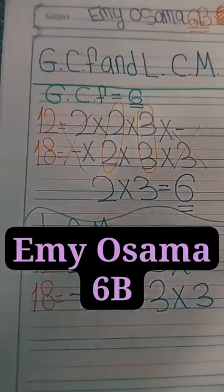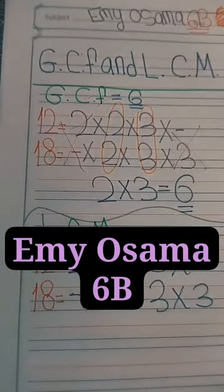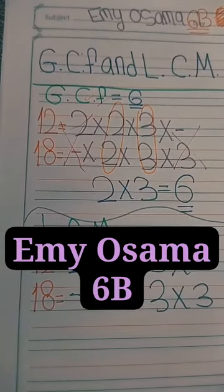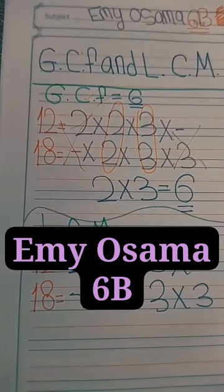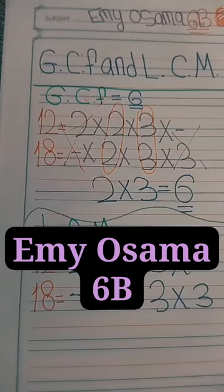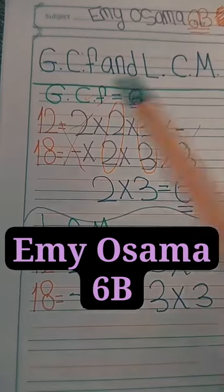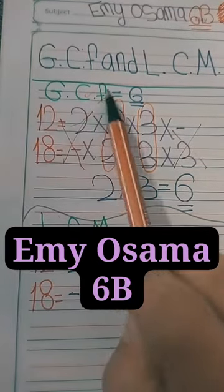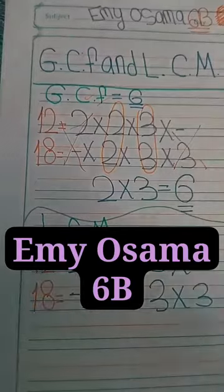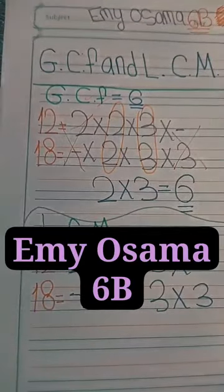So, what shall we do to find the greatest common factor? We are going to multiply: 2 times 3 equals 6. So, the greatest common factor of 12 and 18 is 6. Now, let's go to define the least.